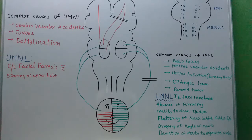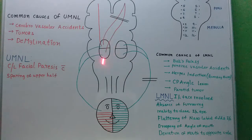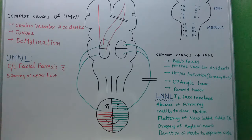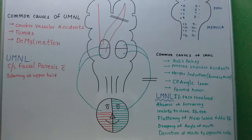In lower motor neuron lesion, there is no crossing, so the ipsilateral face is involved. In upper motor neuron lesion of the facial nerve, there will be contralateral facial paresis with sparing of the upper part. Whereas in lower motor neuron lesion, there will be ipsilateral involvement of the whole face — both upper and lower halves — since only one cortical representation is present.